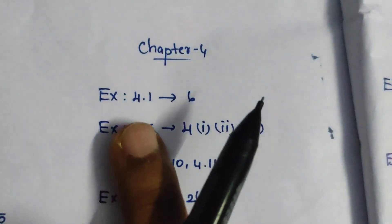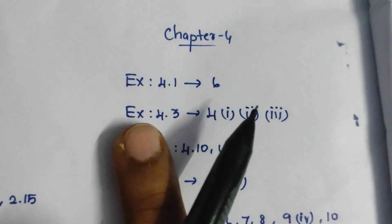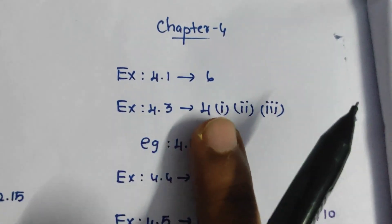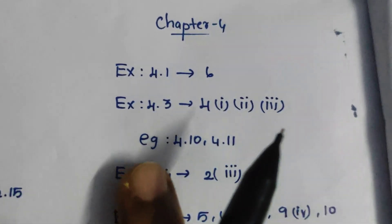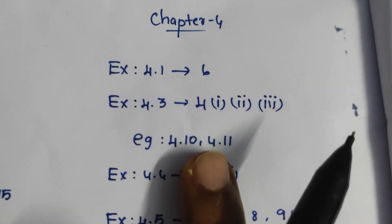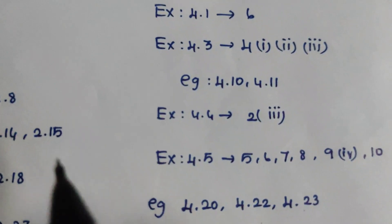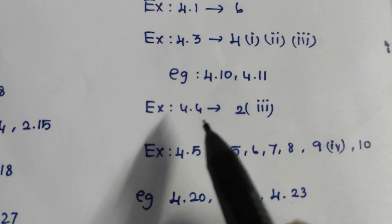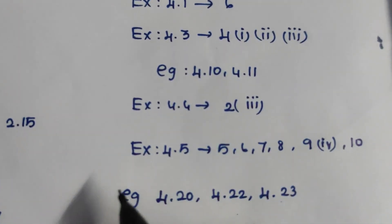Chapter 4, exercise 4.1, 6th sum. Exercise 4.3, 4th sum, 2nd sum, 3rd sum. Exercise 4.4, 2nd sum, 3rd sum.